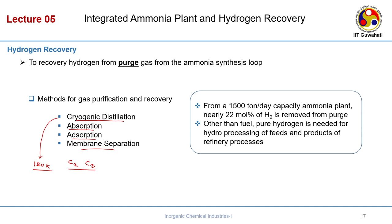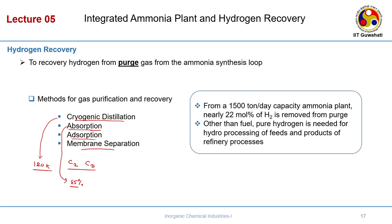Absorption is a well-known process covered in mass transfer. The issue with absorption is hydrogen purity — you cannot get more than 85% pure hydrogen from this process. Absorption is good for scrubbing out carbon dioxide, NOx, or SOx, but for removal of hydrogen from ammonia it is not advisable.